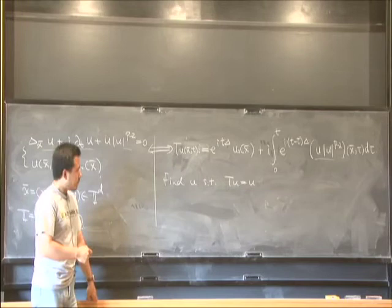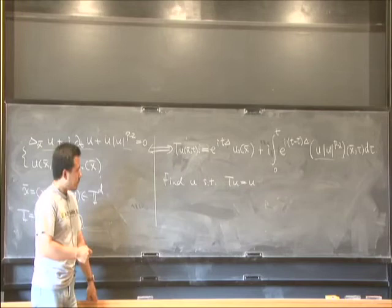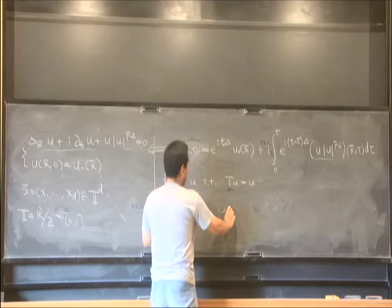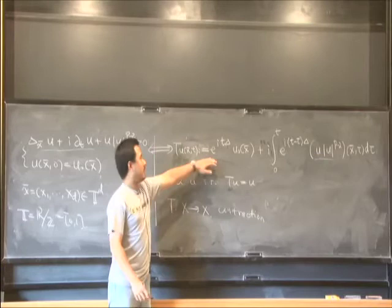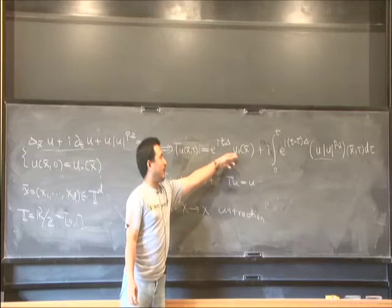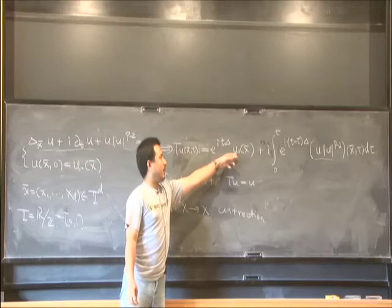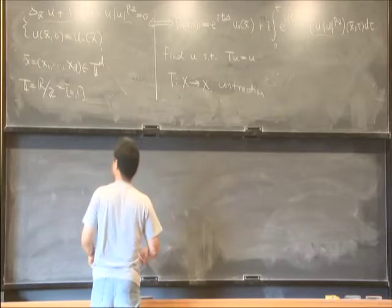To use the Banach fixed point theorem, we need to prove T is an operator mapping from some space X to X, and also it must be a contraction. Again, the linear part is always easy to deal with. You can just bound this norm by the L2 norm of the initial value. But for the nonlinear part, we need an estimate called Strichartz type estimate.